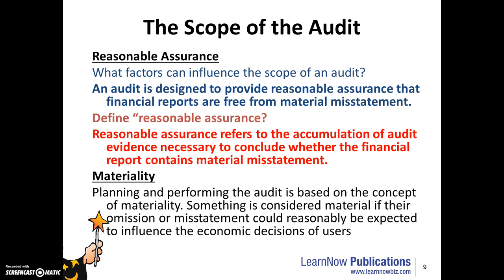What factors can influence the scope of an audit? An audit is designed to provide reasonable assurance that financial reports are free from material misstatement. Reasonable assurance refers to the accumulation of audit evidence necessary to conclude whether the financial report contains material misstatement.